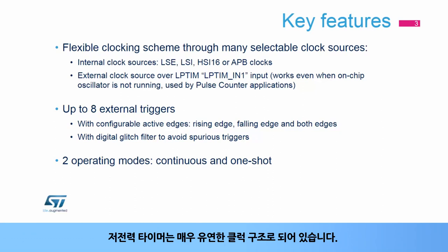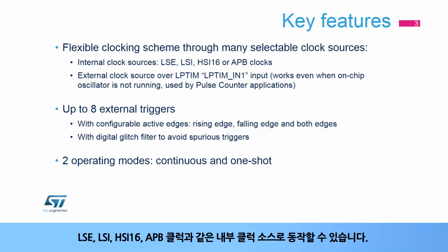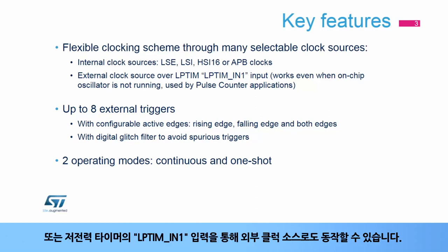The low power timer has a very flexible clocking scheme. It can be clocked from on-chip clock sources: LSE, LSI, HSI-16, or APB clocks. Or it can be clocked from an external clock source over the low power timer's LP-TIM-N1 input.